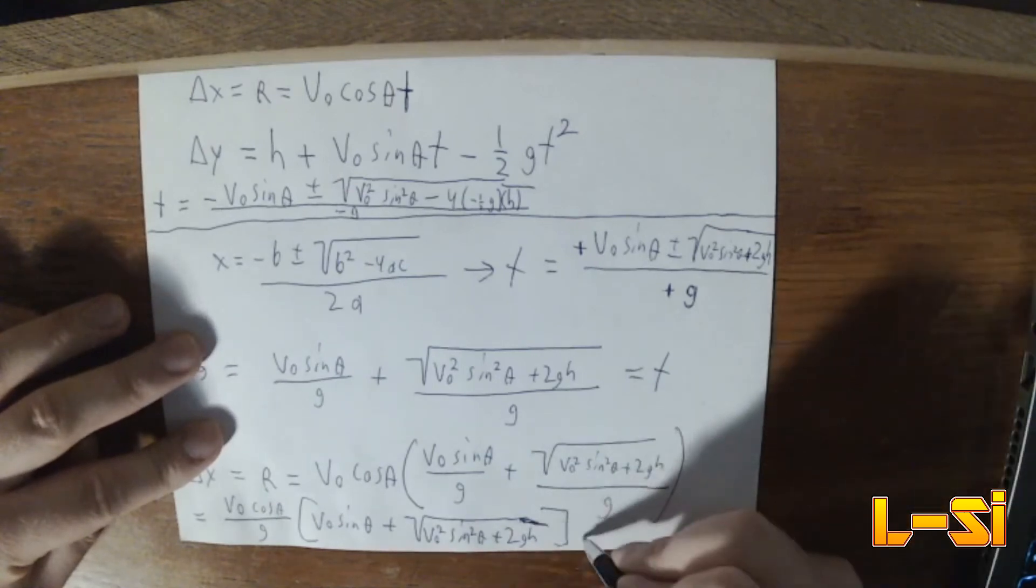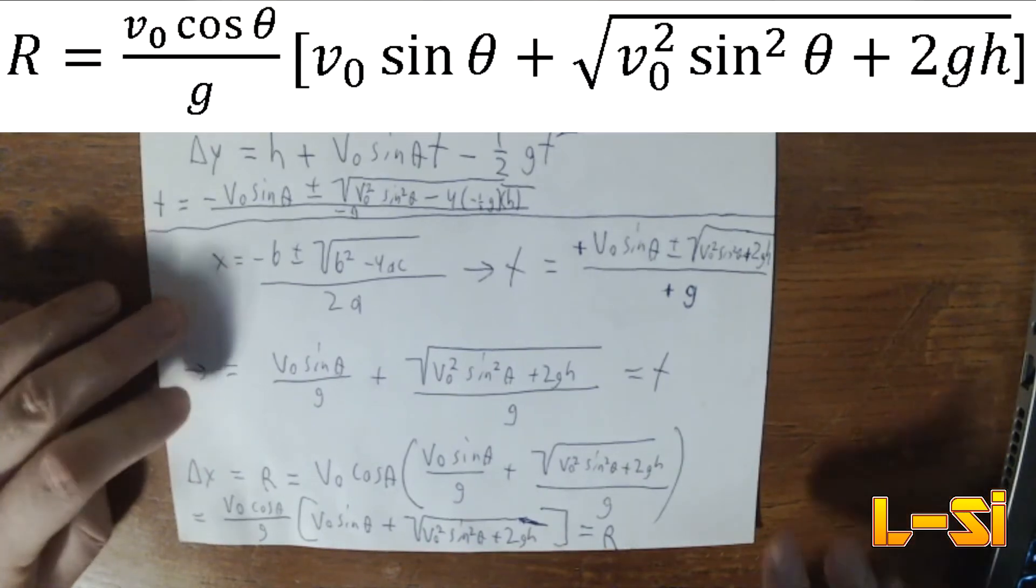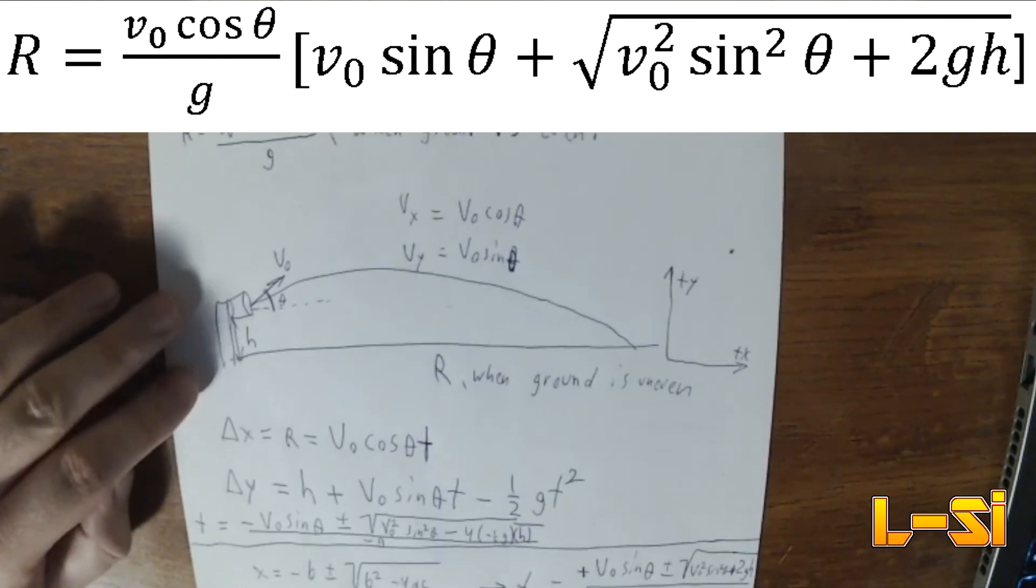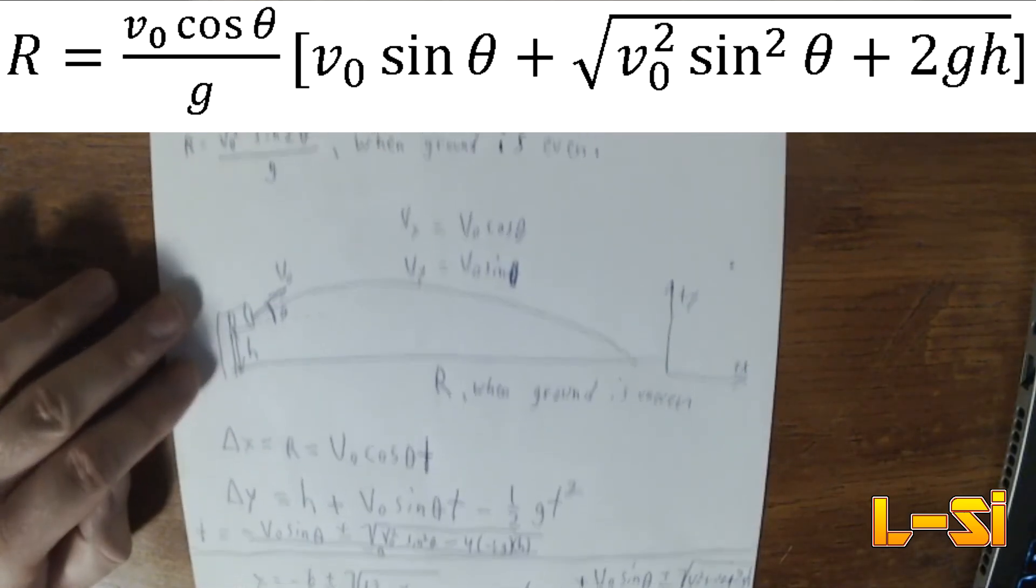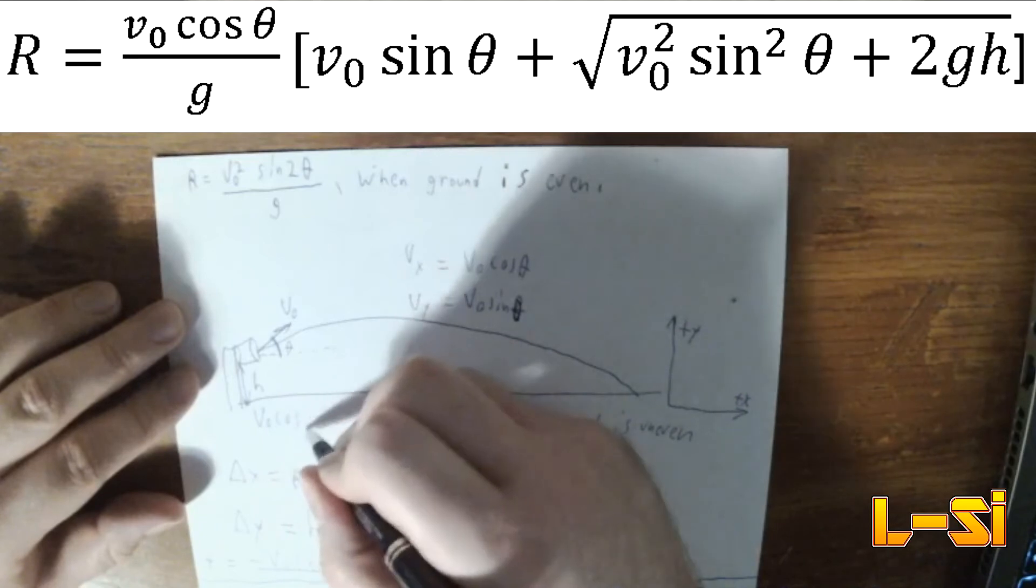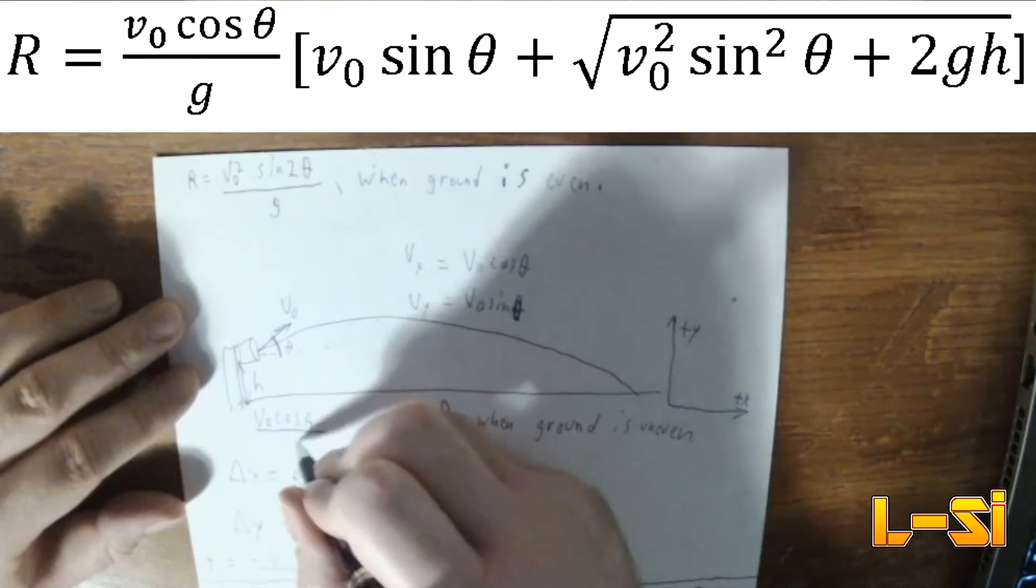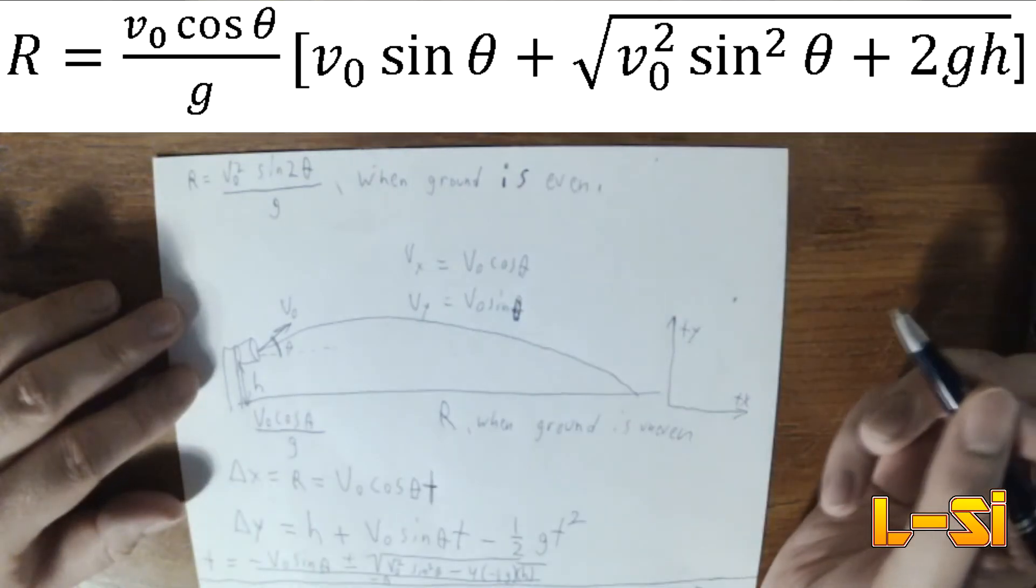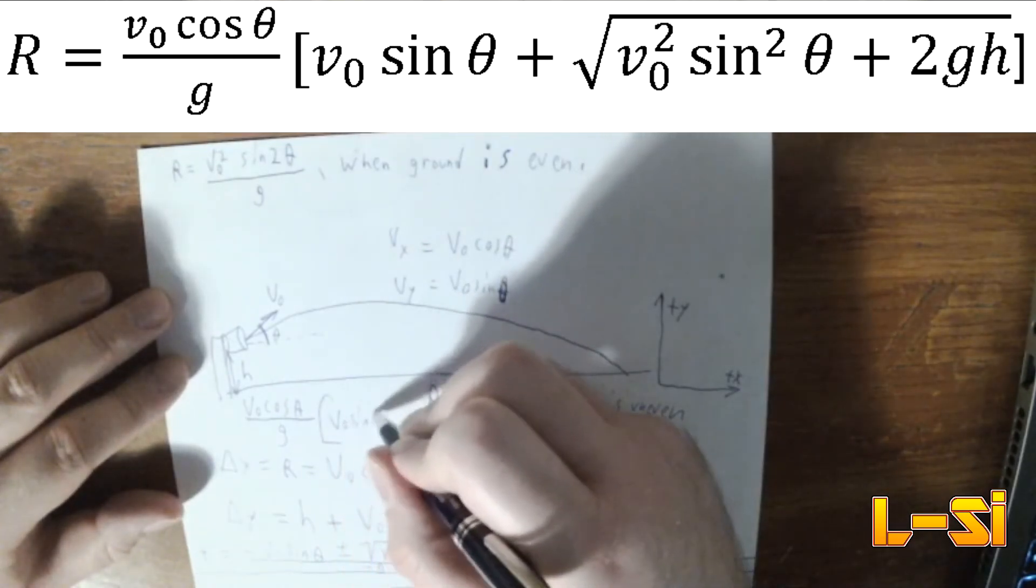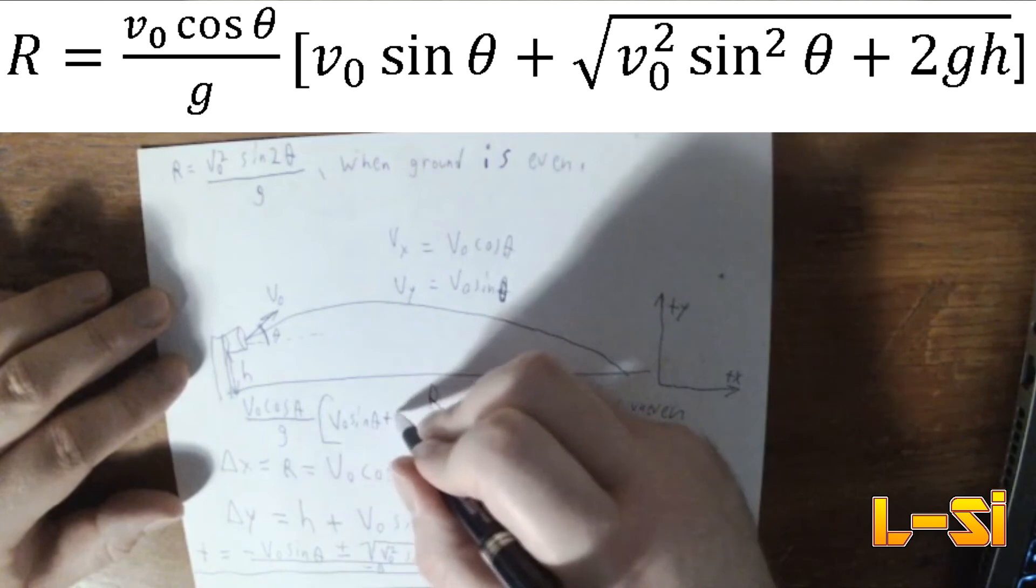And this is your final equation for R. It's about as good as it's going to get, you know, in a sense. So if the ground is uneven, then what you need to know is you need to know that you have some component of velocity in the X. Divide that by your acceleration due to gravity.